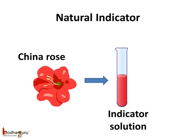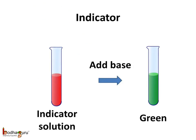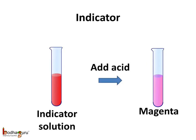This colored solution can be used as an indicator. Similarly, indicators can also be produced from brightly colored parts of plants such as roots — for example beetroot — or stems, as we saw with turmeric. If we add basic substances like soap or baking soda into this red solution obtained from china rose petals, it will turn green. And if we add acidic substances into this red solution, it will turn magenta.